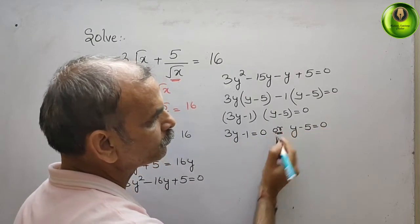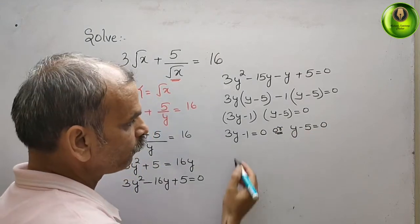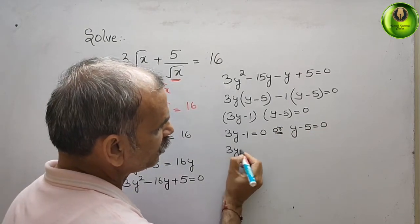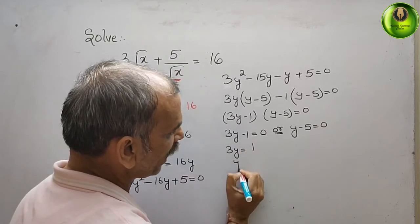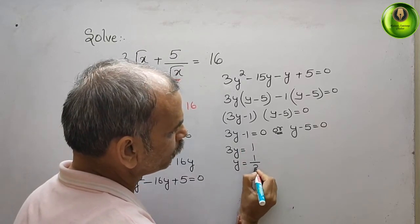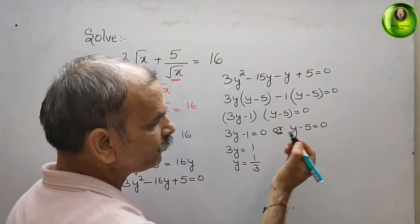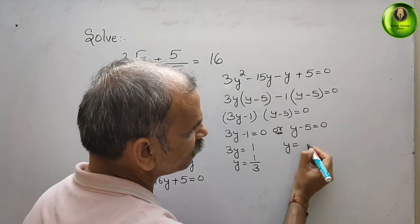Here or will come. So what is your y? We have to tell that. So 3y is equal to minus 1 goes to right side. It will be 1. Y is equal to 1 by 3. And here if you see y is equal to 5.